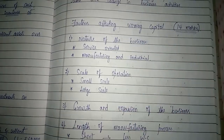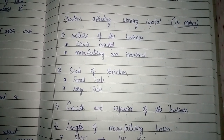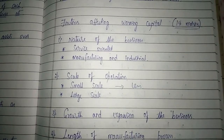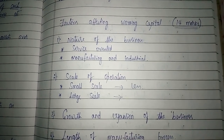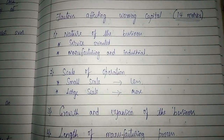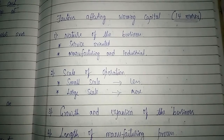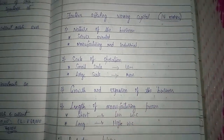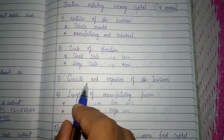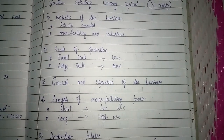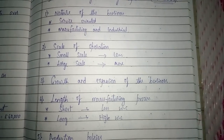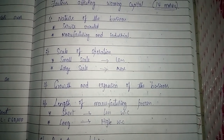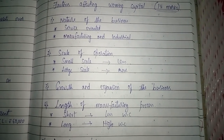The second factor is scale of operation. A small scale industry requires less working capital, while a large scale industry with large-scale operations requires more working capital. The level of operation determines the working capital requirement. The third factor is growth and expansion of the business. If a company wants to expand its manufacturing activity, it requires higher working capital. If the company has no growth or expansion plans, it requires less working capital.